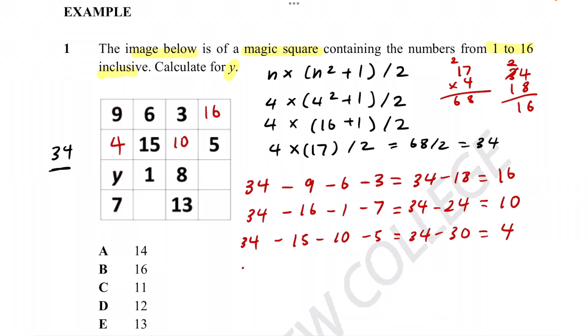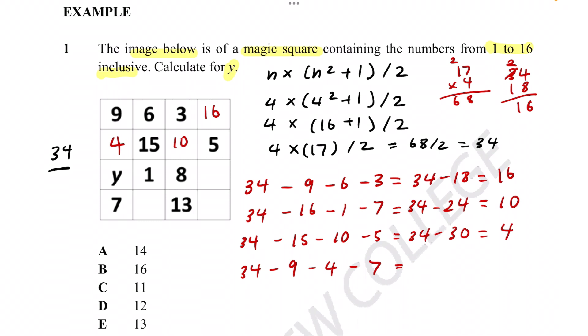And now we can do the final stretch so we can get the y. 34 minus 9 minus 4 minus 7. 7 plus 4 is 11, 11 plus 9 is 20. We can assume it's 34 minus 20, which will equal 14. So if y is 14, then this should equal 34.